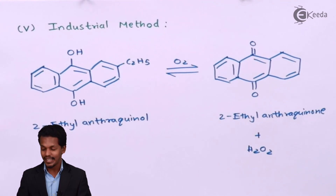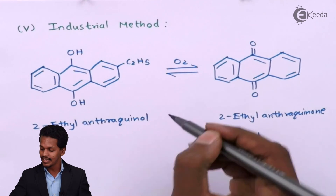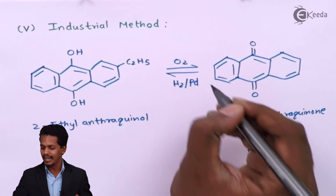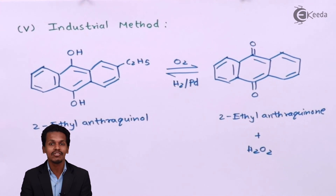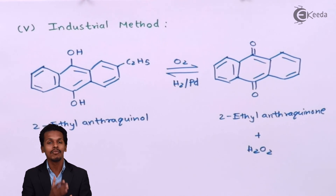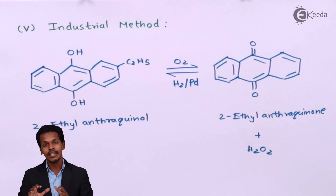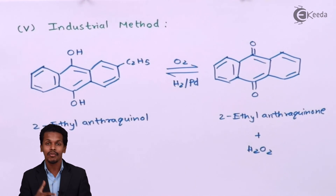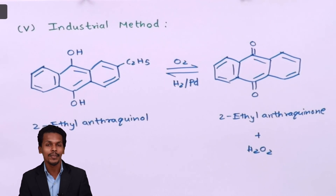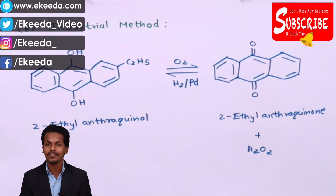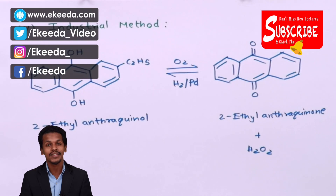This reaction is reversible, and with the help of water and a palladium catalyst, it can be reversed back to 2-ethyl anthraquinone. H2O2 is very reactive in the presence of sunlight and can decompose easily to give H2O and oxygen. Therefore, H2O2 should be stored in a plastic or Teflon container placed in the dark to avoid decomposition. A small amount of phosphoric acid is also added as a stabilizer. Thank you friends for watching; I hope you understood the various methods to prepare H2O2.